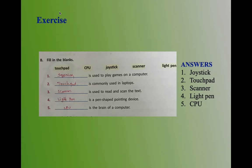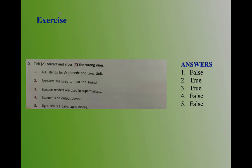Fifth question: Dash is the brain of a computer. The answer is CPU. Coming to set D, true or false. First question: ALU stands for arithmetic and long unit. The answer is false. ALU stands for arithmetic and logic unit.